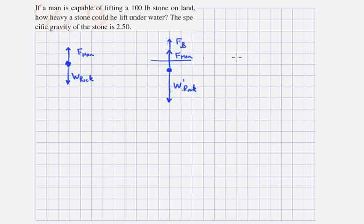So clearly from this last free body diagram, we can say that W' rock, the weight of the rock that he can lift when it's in water, is equal to the force that he can exert plus this buoyant force. The sum of these two vectors.